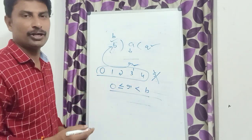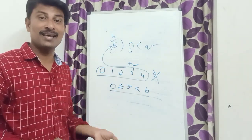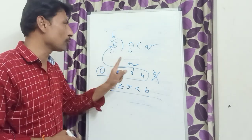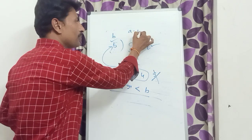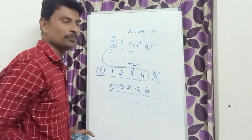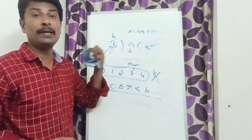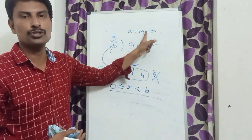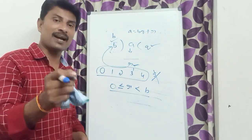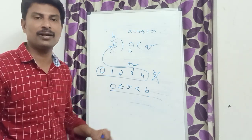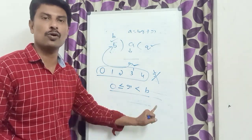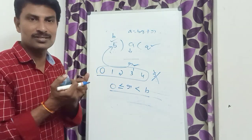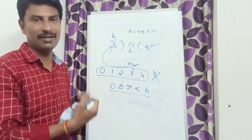For every two positive integers A and B, there exists a unique pair of integers Q and R such that A is equal to BQ plus R — just which is obtained by using the division algorithm. Dividend is equal to divisor into quotient plus remainder, and a certain condition is there for the remainder. The condition for remainder: remainder always lies between 0 and B, where 0 is included and B is excluded. In other words, remainder is always less than the divisor.